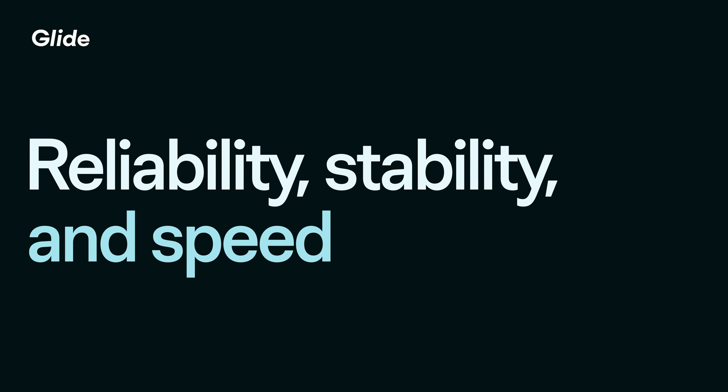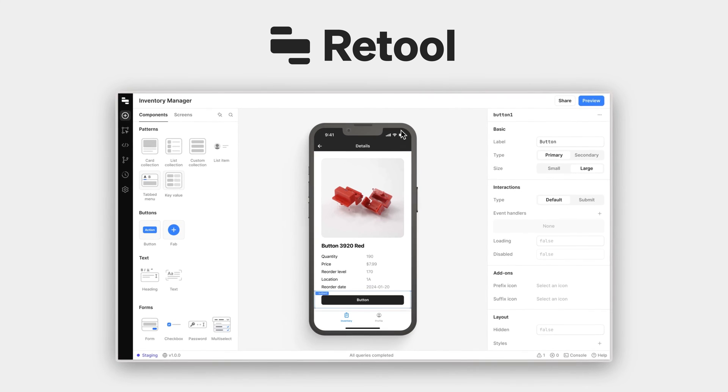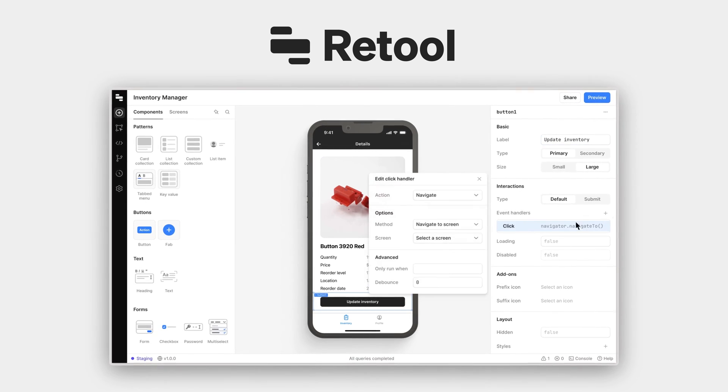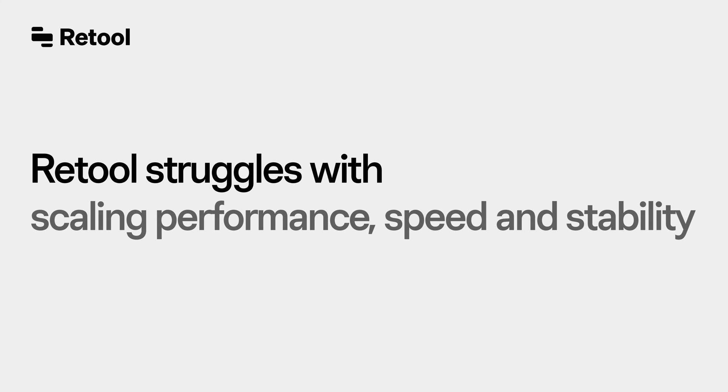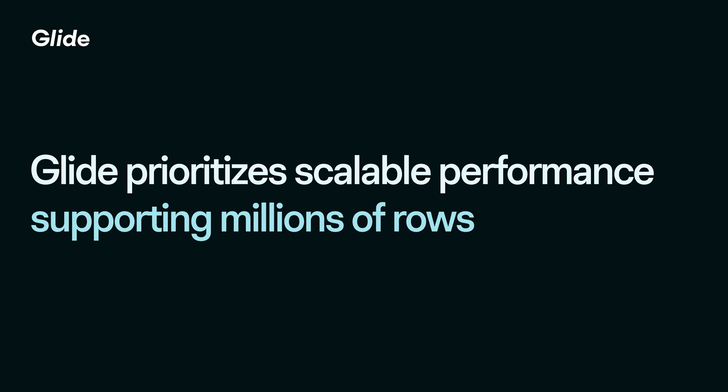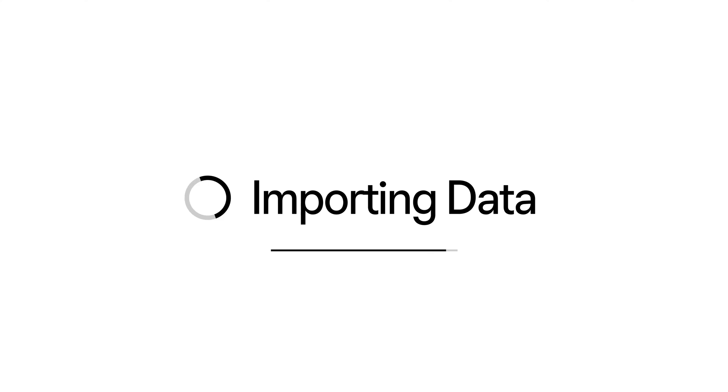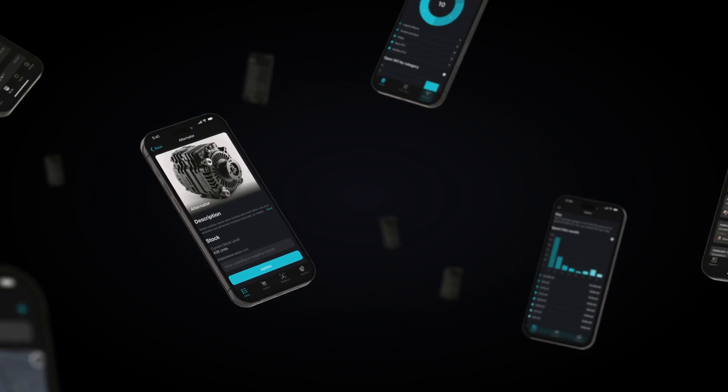Reliability, stability, and speed. Retool's low-code development offers customization and large dataset usage, but it struggles with scaling performance, speed, app stability, and an occasionally slow browser-based IDE. Glide, on the other hand, prioritizes scalable performance. Glide DataGrid, powering Glide's Data Editor, supports millions of rows and numerous updates per second, promising speed and stability.